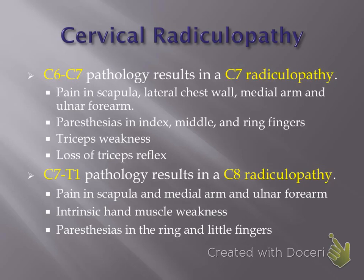With a C7-T1 pathology, you will get a C8 radiculopathy — remember, there are eight cervical nerve roots. A C8 radiculopathy will result in pain in the scapula region, medial arm, and ulnar forearm, with paresthesias into the ring and more commonly the little finger. Classic to a C8 radiculopathy is weakness in the intrinsic muscles of the hand, so you'll get classically weak grip strength with C8 as well.